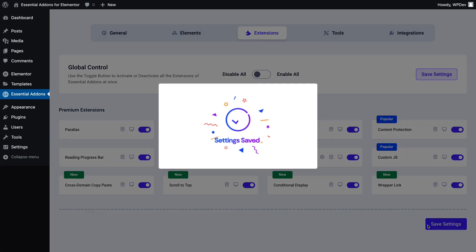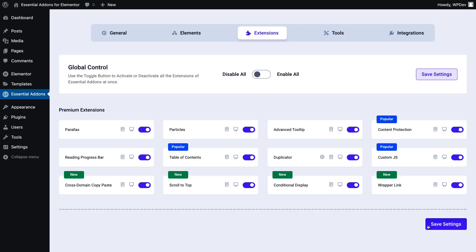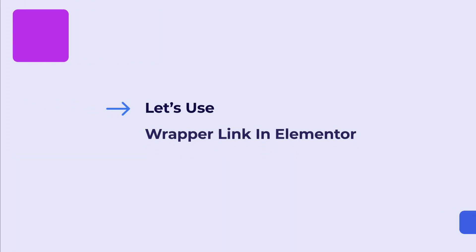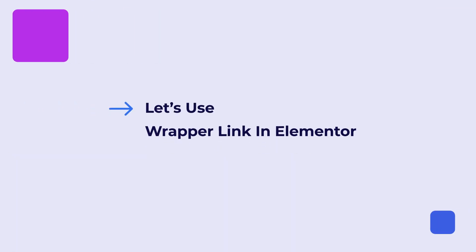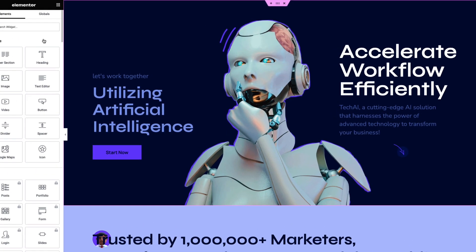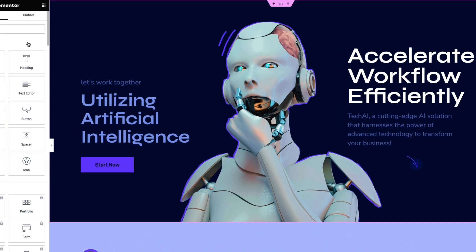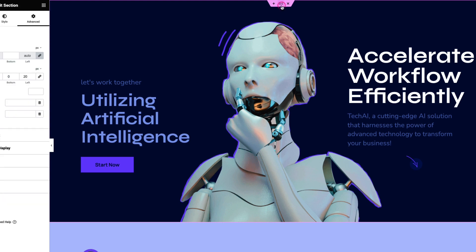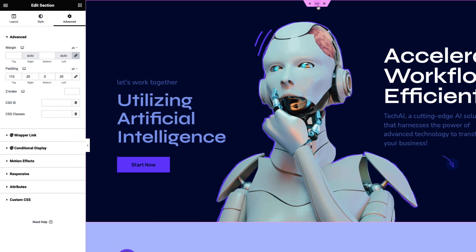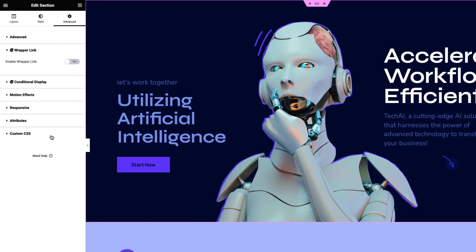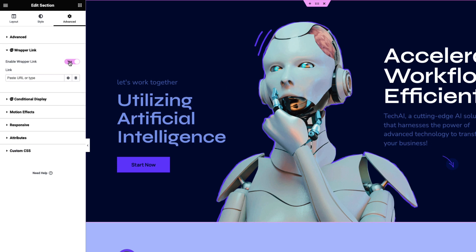Now open a page in Elementor and click on the dots above the section you added. Next, click on Wrapper Link and toggle the Enable Wrapper Link button. Enter the link where you want to direct the visitors when they click on the section.